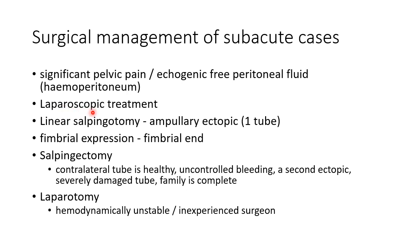Laparoscopic approach is preferred. Linear salpingotomy is preferred when there is an ampullary ectopic and when it is the only fallopian tube. Salpingotomy is a procedure in which you make an incision in the fallopian tube and remove the ectopic pregnancy. Fimbrial expression can be done when the ectopic pregnancy is present at the fimbrial end. Salpingectomy is the treatment of choice when the contralateral tube is healthy, when there is uncontrolled bleeding, when it is the second ectopic in the same tube, when the tube is severely damaged, or when the woman has completed her family. Laparotomy is preferred when the patient is hemodynamically unstable or when the surgeon is inexperienced.